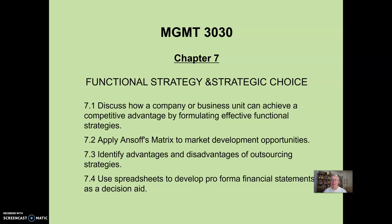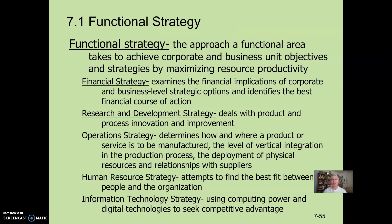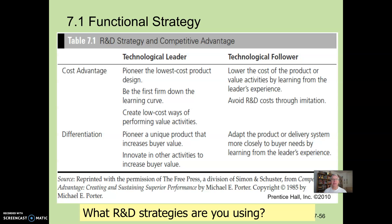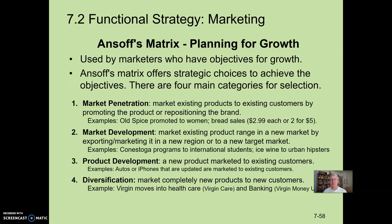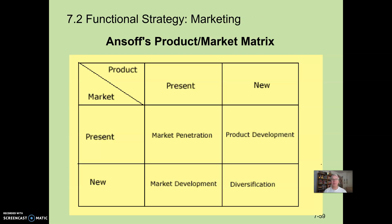In the seventh chapter, we looked at functional strategy and strategic choice — each department developing its own strategies. Examples include the R&D strategy, where you could be a technological leader or follower, and both can be very effective. In marketing, we develop strategies to capture larger market share through market development or product development strategies. A particular tool that's been around for a long time is Ansoff's Matrix to help plan for growth, and we gave an exercise in that.